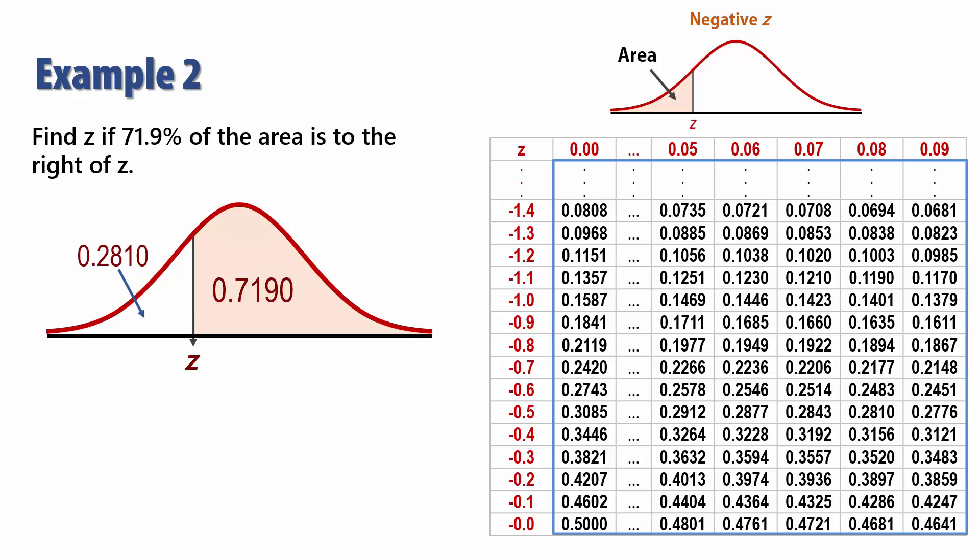Searching the area section, we find 0.2810 exactly here, corresponding to a Z score of negative 0.58.